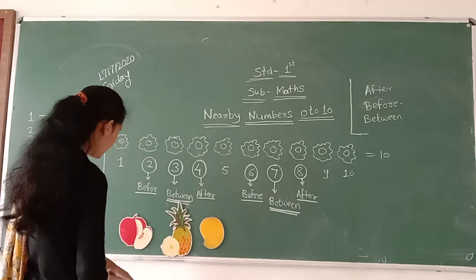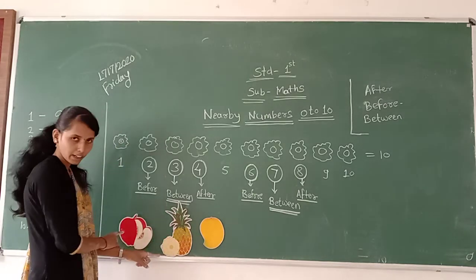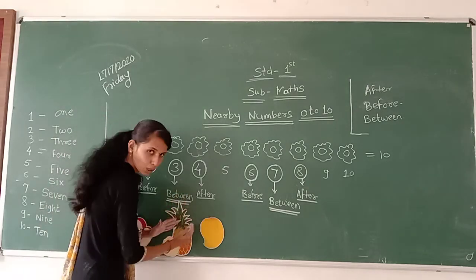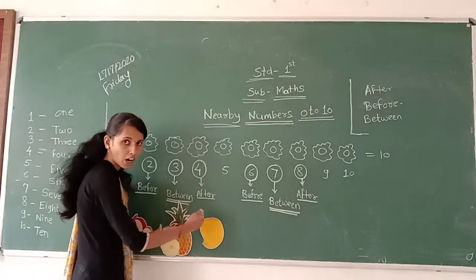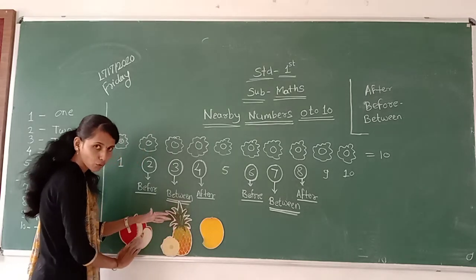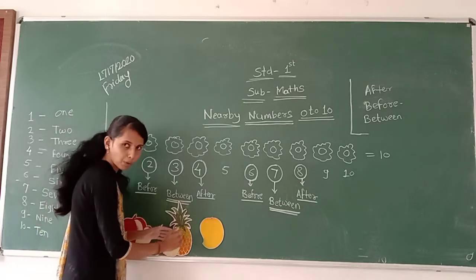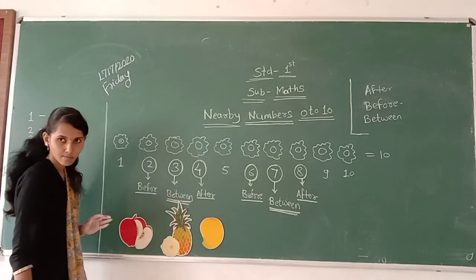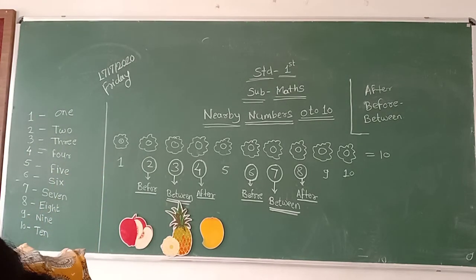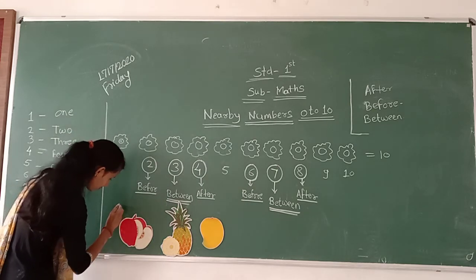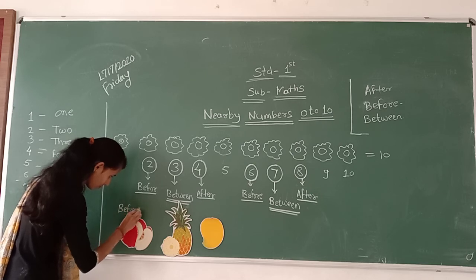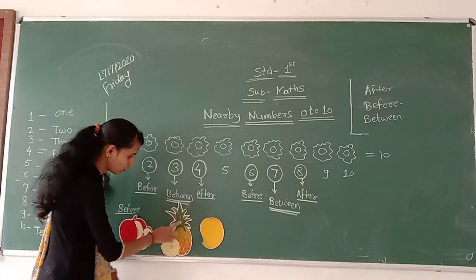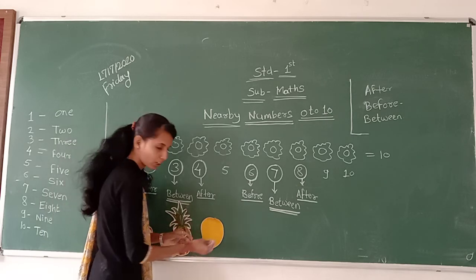Next example. 3 fruits here — see here: pineapple, mango, and apple. Pineapple is the middle fruit, means between fruit. Pineapple after fruit is mango, and pineapple before fruit is apple. So apple is before, pineapple is between, and mango is after fruit.